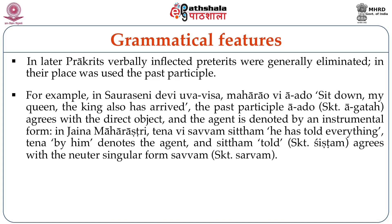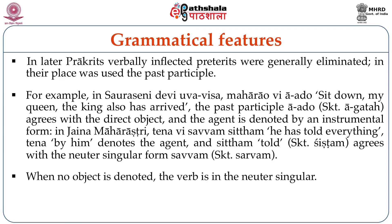For example, in Sauraseni: 'Devi, uvavisa, maha rao vi aado siden' — 'My queen, the king has also arrived.' Here the past participle agatha in Sanskrit agrees with the direct object, and the agent is denoted by an instrumental form. In Jain Maharashtri: 'Tenavi savvam sittam' — 'he has told everything.' Tena (by him) denotes the agent, and sittam (told; Sanskrit shishtam) agrees with the neuter singular form savvam (Sanskrit sarvam). When no object is denoted, the verb is in the neuter singular.